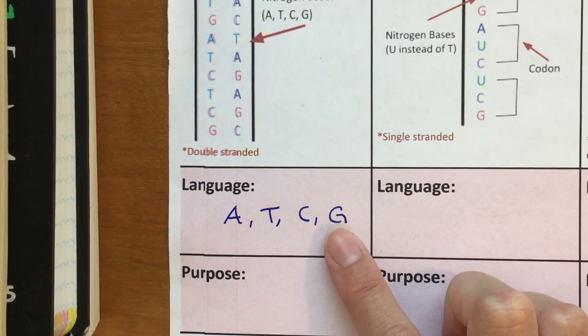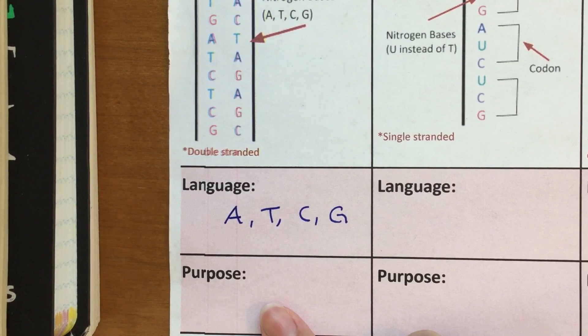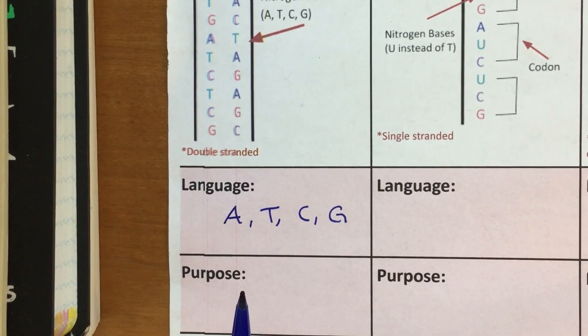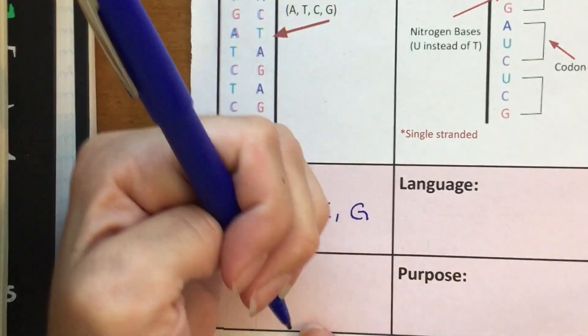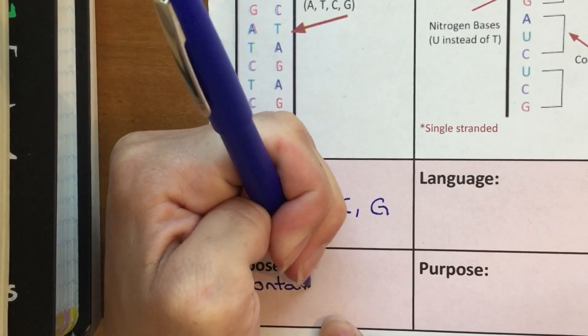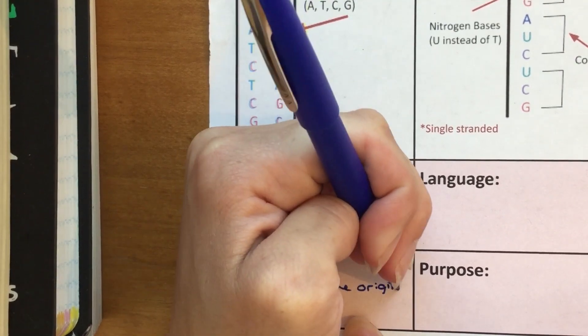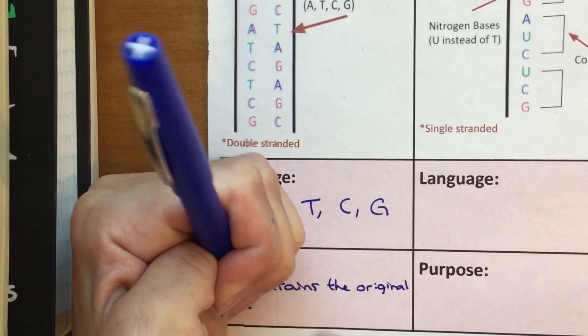So what is the purpose of DNA? Again, this is a little bit of a review, but the purpose of DNA is that it's basically a code. It's our entire code that is able to make proteins which give us our traits to make us who we are. So I'm going to write for purpose: contains the original code for making proteins.